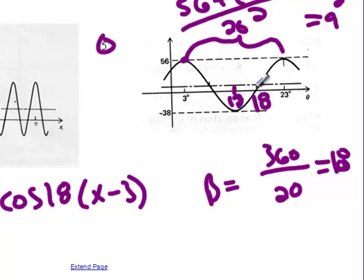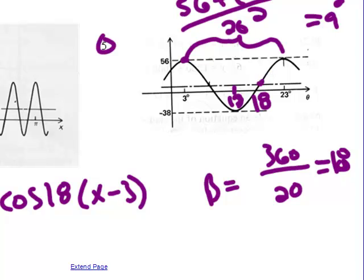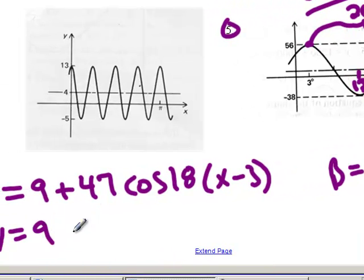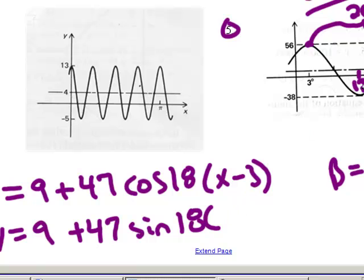So I'm going to do a sine equation focusing right there. So my sinusoidal axis stays the same. So does my amplitude. Except now I'm going to write this as a sine equation. So this is going to be sine of. B stays the same. And then it's x minus 18.